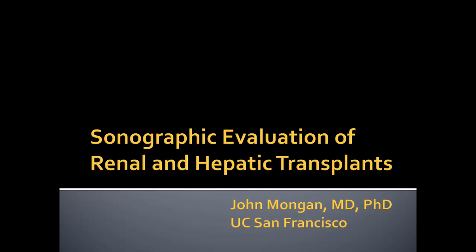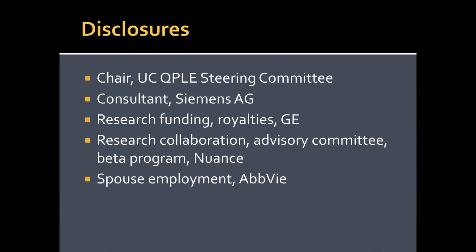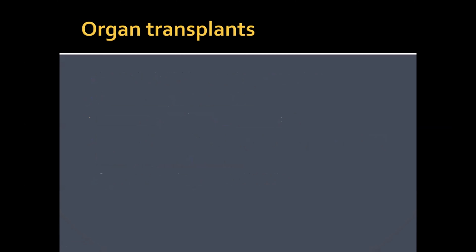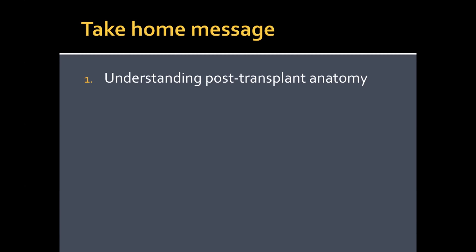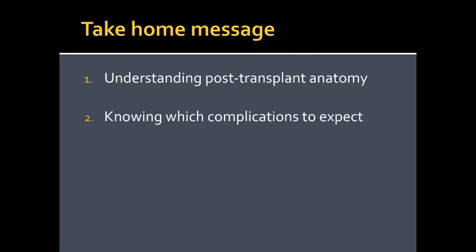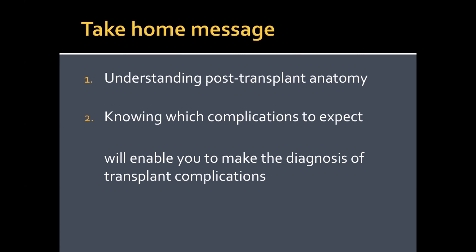I'm John Mangan from UC San Francisco, and I'm really pleased to speak to you today about sonographic evaluation of transplants. Today we're going to be talking about organ transplants — specifically the two most common abdominal organ transplants: kidney and liver transplants. The take-home message is that the two keys to effectively evaluating these transplants are understanding post-transplant anatomy and knowing which complications to expect so you know what pathology to look for.